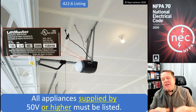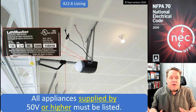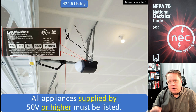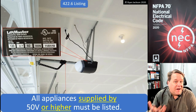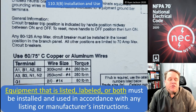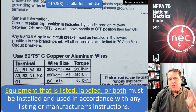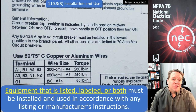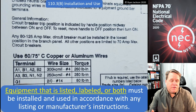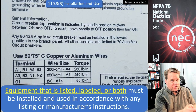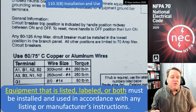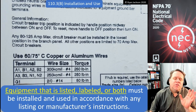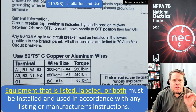Before we get too deep, I need to state an obvious issue: if the instructions say that you need an individual circuit, then you have to follow the instructions. 422.6 tells us that all appliances supplied by 50 volts or more have to be a listed product. And section 110.3(b) tells us that equipment that is listed or labeled must be installed following the manufacturer's instructions. So if the product is listed and the instructions say it needs its own circuit, that's the end of the discussion. But if the directions do not tell us how to circuit it, then we use the code book, starting with section 422.10.